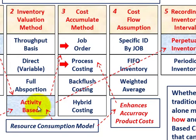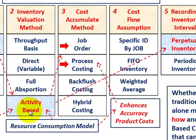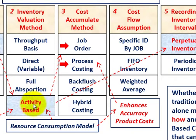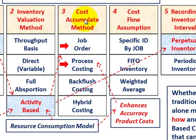Activity-based costing can also be a standalone system — used only to gather information for management. In that case, the company could be using some other inventory method, but using ABC as a standalone system because it gathers accurate cost information. That information can then be used to enhance the accuracy of product costs under job order costing, process costing, and so forth.